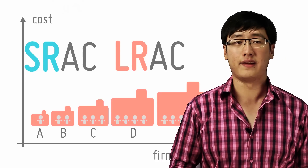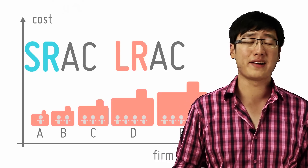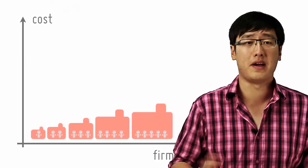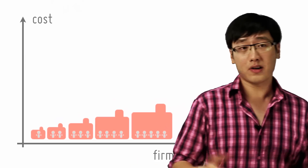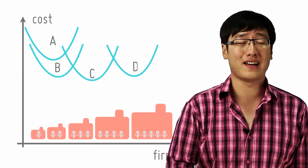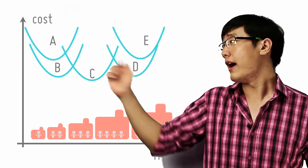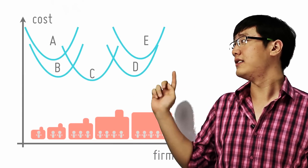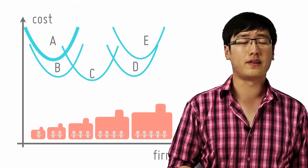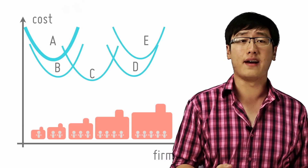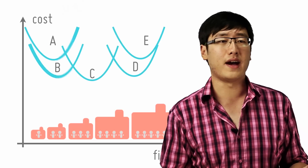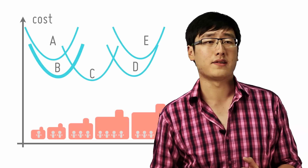So we have two ACs here and the natural question to ask is what's the relationship between these two ACs? Let's say you're at Foxconn and you have five factory sizes to choose from: A, B, C, D, E. A is the smallest because it's on the SRAC on the left, and E is the largest with the SRAC on the right.